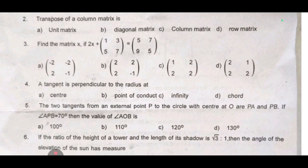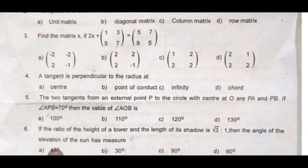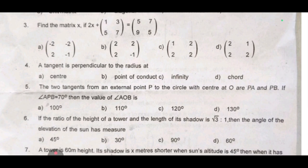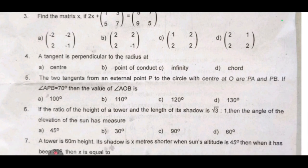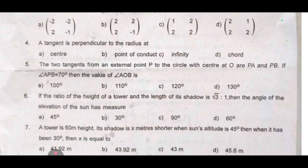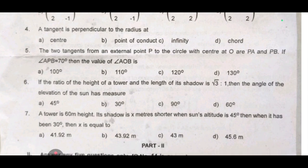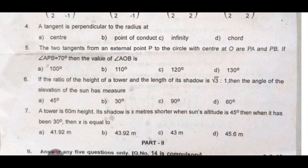Fourth one: a tangent is perpendicular to the radius at dash. Fifth one: the two tangents from an external point P to the circle with center at O are PA and PB.